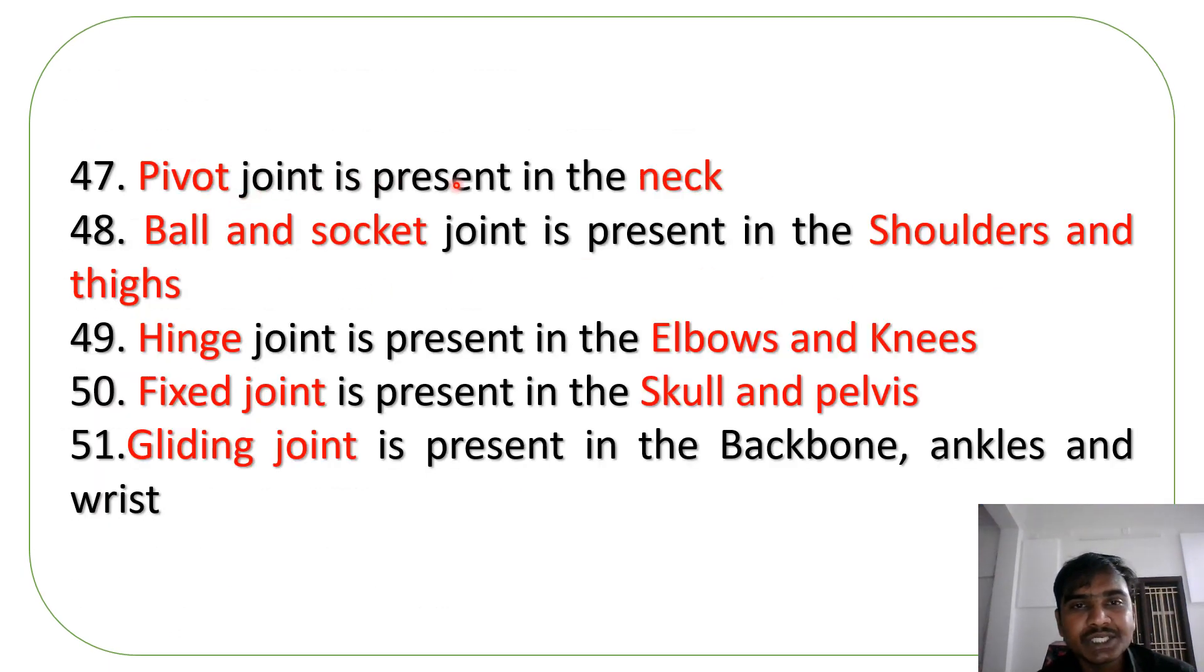The pivot joint is present in the neck region. Ball and socket joint present in the shoulders and thighs. Hinge joint present in the elbows and knees. Fixed joint is present in the skull and pelvis. Gliding joint is present in the backbone, ankles and also wrist.